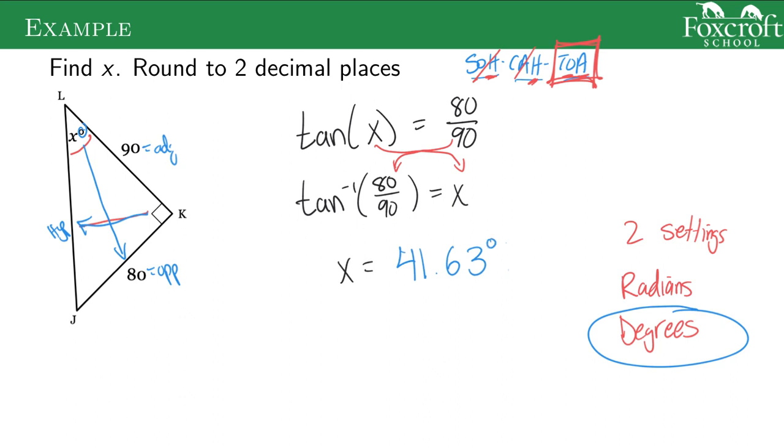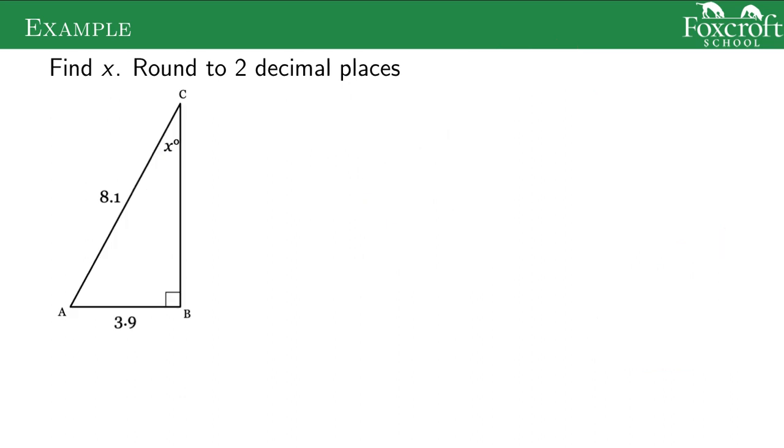Make sure you're doing this first step here of writing using the original trig functions first before you start trying to do all the inverse stuff. Another example: we're trying to find this x value here. Let's label the sides of our triangle. We have a hypotenuse, we have the opposite side, and we're missing the adjacent side.